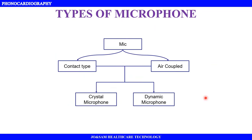Next, we talk about the types of microphones. There are two types of microphones used: contact type and air-coupled type. The contact type is placed directly on the chest region for direct skin contact. The air-coupled type does not have direct skin contact — it captures sound through an air gap. Both contact type and air-coupled type microphones can be used.